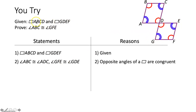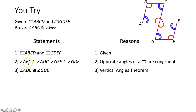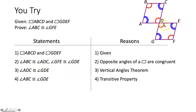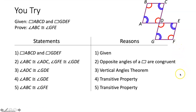We're trying to prove angle ABC ≅ angle GFE. We know angle ABC ≅ angle ADC and angle ADC ≅ angle GDE by the transitive property. We also know angle GDE ≅ angle GFE because opposite angles in a parallelogram are congruent. Therefore angle ABC ≅ angle GFE by the transitive property.